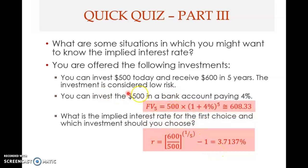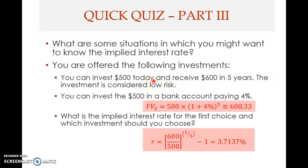Therefore, you would reject the first investment and accept the second. The second method is to find the future value for the second option, since its future value is unknown. FV = 500 × (1 + 0.04)^5 = 608.33. Now note that the first investment only gives you $600, while the bank account gives $608.33, which is higher. So you choose the bank account and reject the first investment. Any method — computing the implied rate or the future value — leads to the same conclusion.